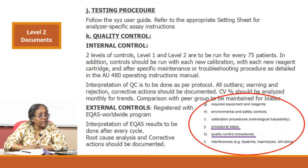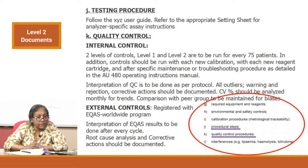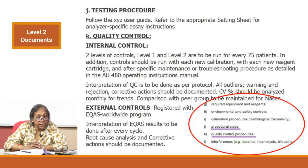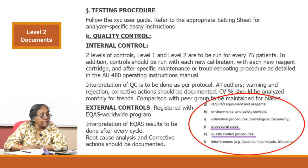After calibration comes your sub-clause J — the testing procedure. This is where you write down everything from the analyzer guide. Everything should be written clearly for the operator to do the testing correctly.